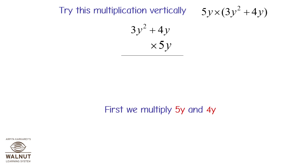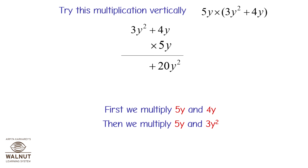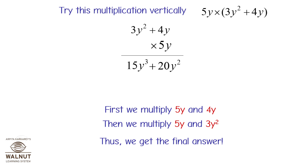First we multiply 5y and 4y, then we multiply 5y and 3y squared, and thus we get the final answer.